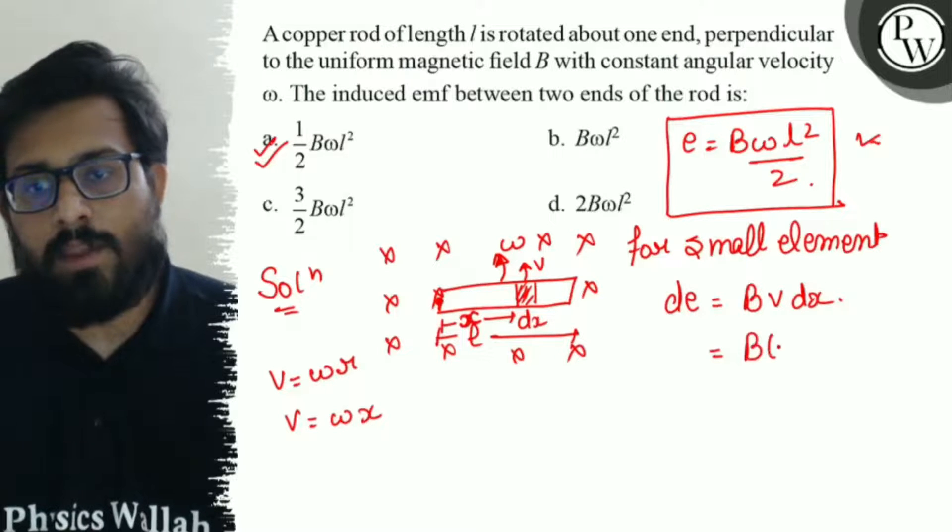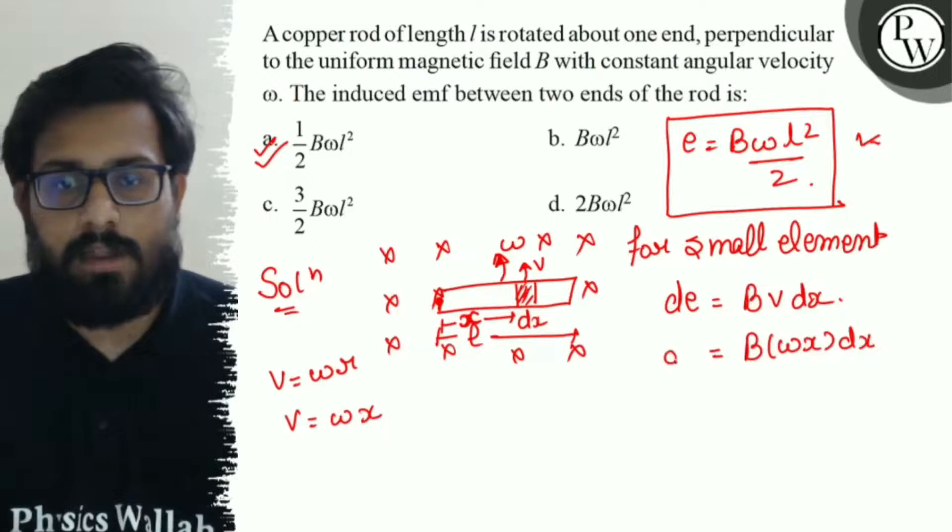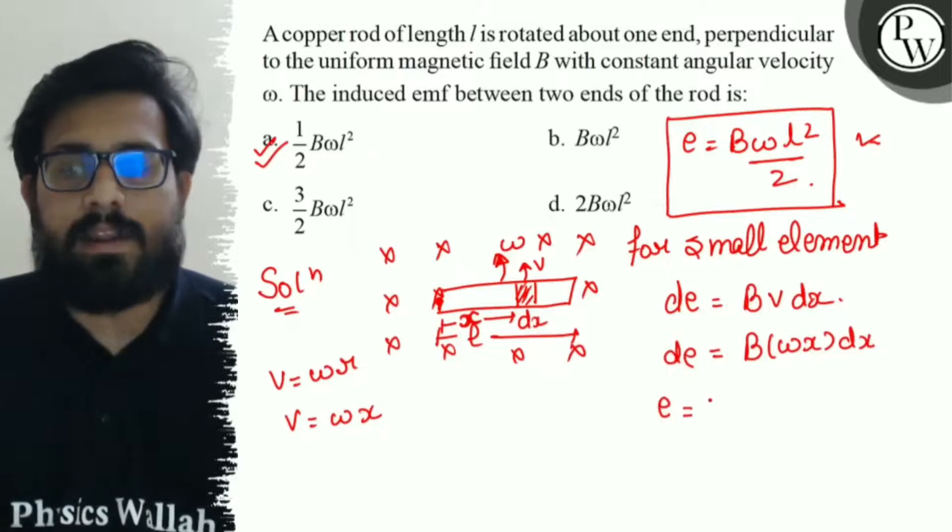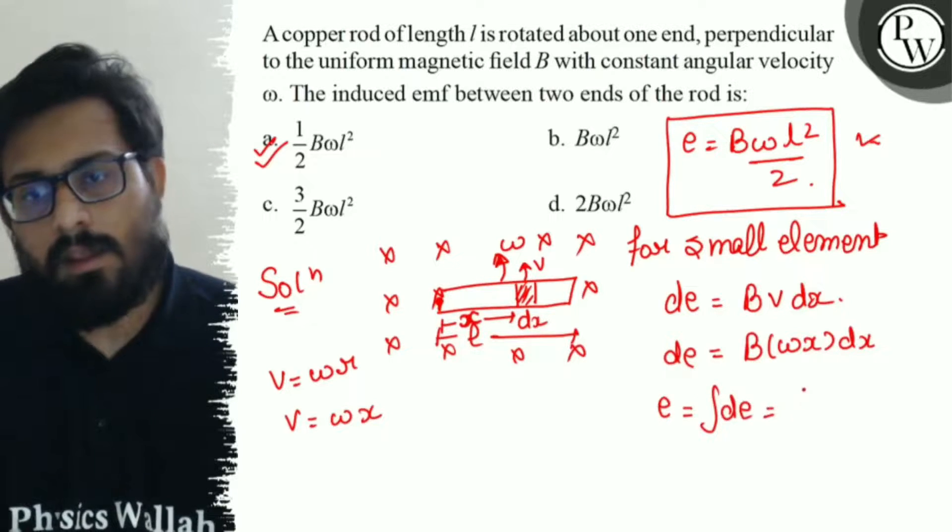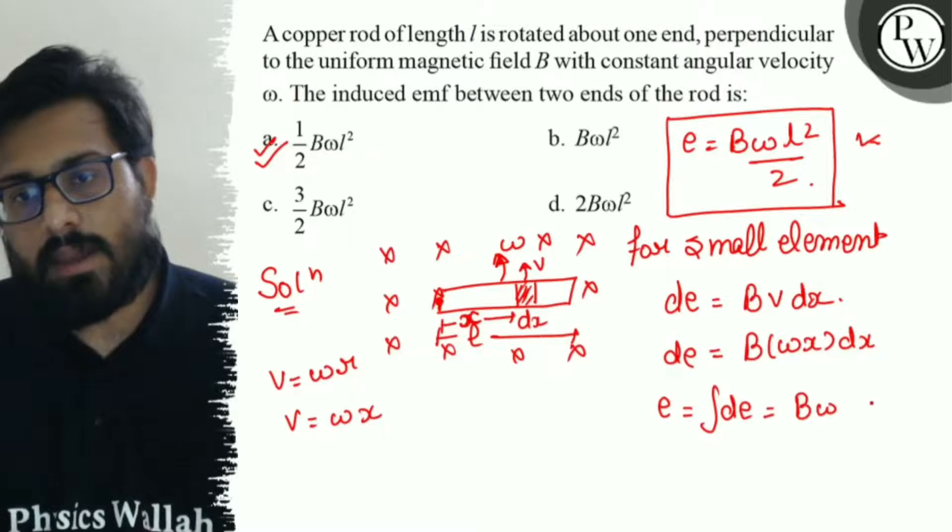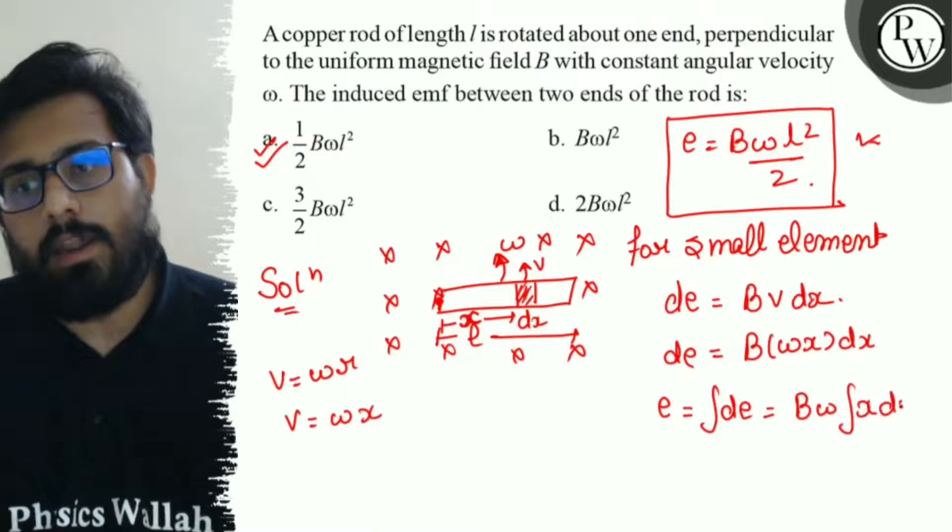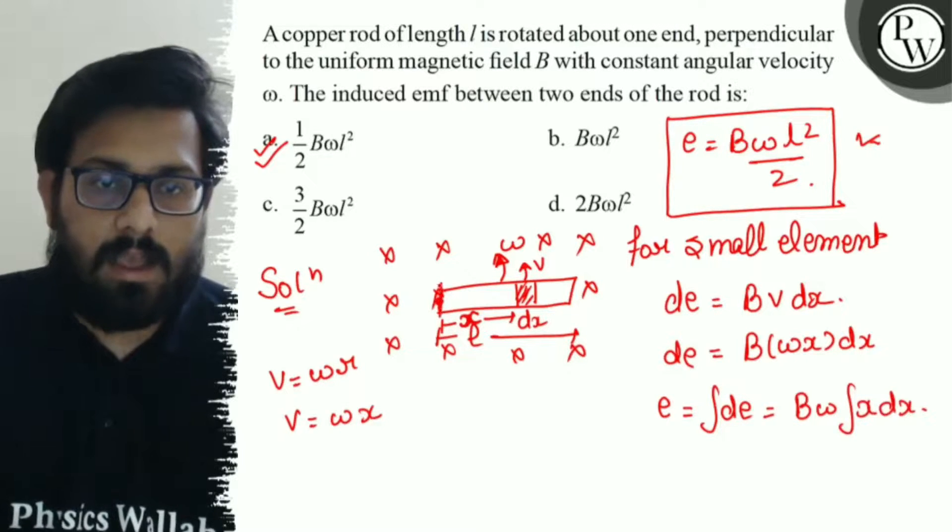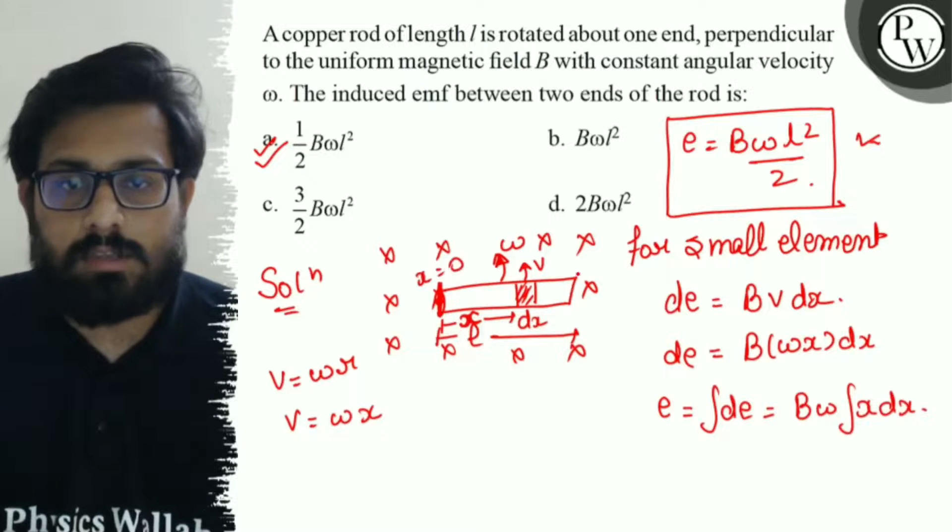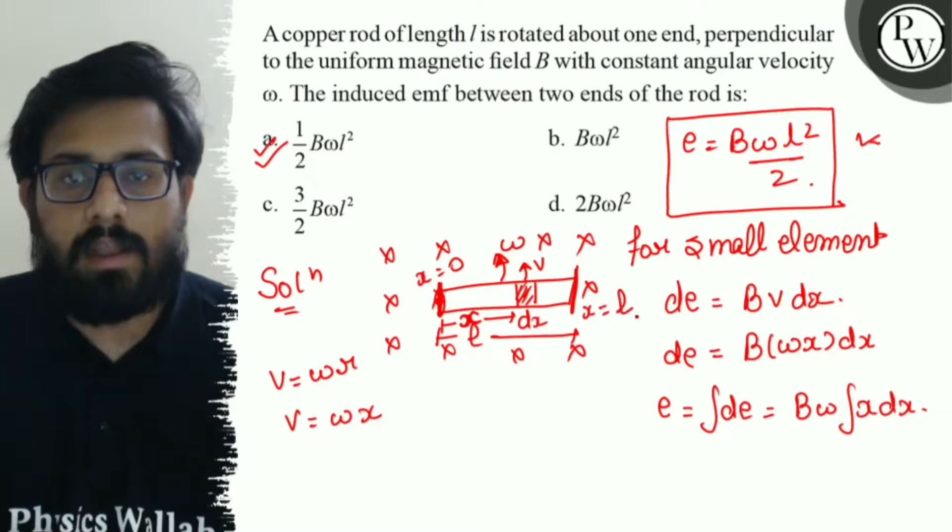So B into, instead of V, we can write it omega X, dx is the value of dL. So, if we have to find e, then we have to integrate de. B and omega are constant, so we take them out. Integration of X dx. Where do we apply the limits? At this point X is 0, and at the other end X value will be L.